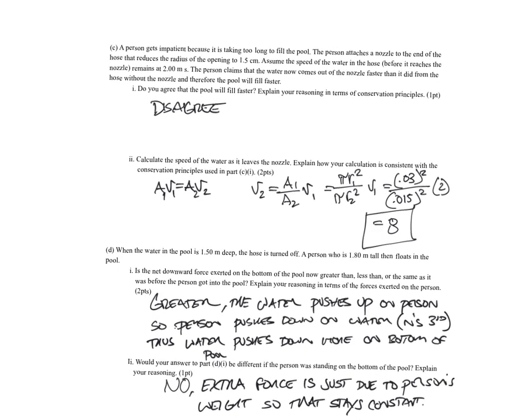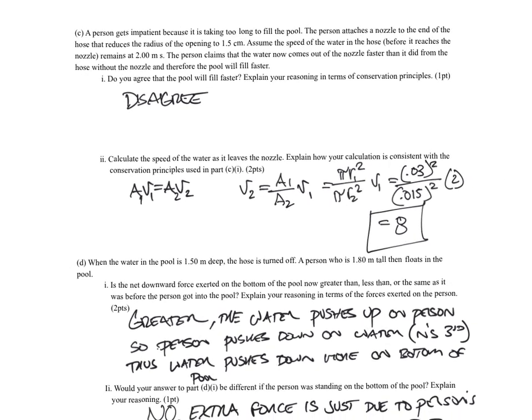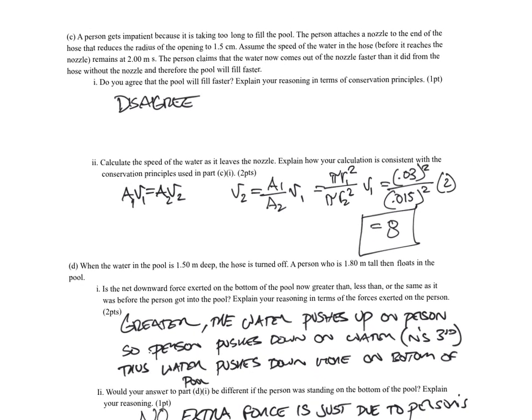Second part of the question asks, a person gets impatient, is taking too long to fill the pool. A person attaches a nozzle at the end, reduces the radius of the opening to 1.5 centimeters. So a person claims that the water now coming out of the nozzle faster, and it did before, and therefore the pool will fill faster. Do you agree that the pool will fill faster? And I said no.